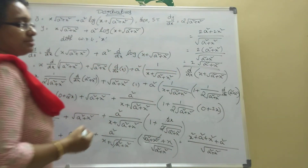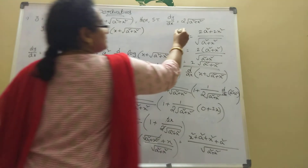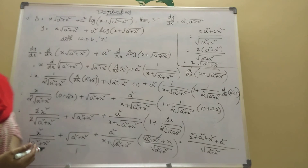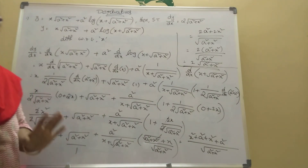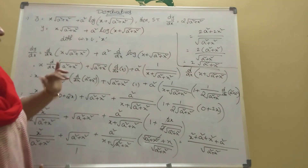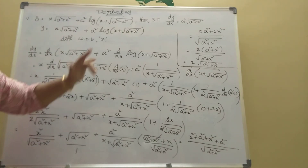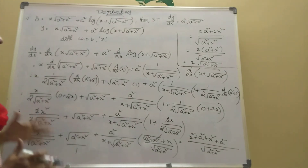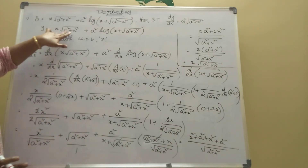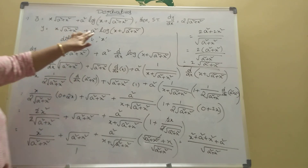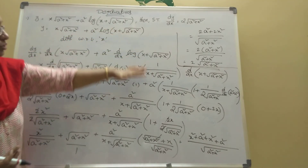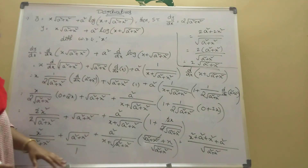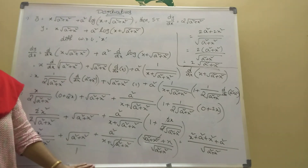This is the final answer. dy by dx is equal to 2 into root of a square plus x square. This is a very important sum — out of 8 sums in dy by dx terms, we have proved dy by dx equal to 2 into root of a square plus x square. When two x terms are there, take UV. a square is the coefficient. Log of this — do it carefully. Easy only. Thank you. Please watch, share, and subscribe my channel. Thank you.